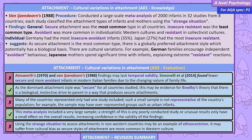Ainsworth's and Van IJzendoorn's findings may lack temporal validity. Simonelli (2014) found fewer secure and more avoidant infants in modern Italian families due to the changing nature of family life. As the dominant attachment style was secure for all countries studied, this may support Bowlby's theory that there is a biological instinctive drive to parent in a way that produces secure attachments. However, many countries were represented by only one study, meaning the sample may not be representative — for example, over-representing urban infants. Using the strange situation in non-Western countries may be an example of ethnocentrism and cultural bias.